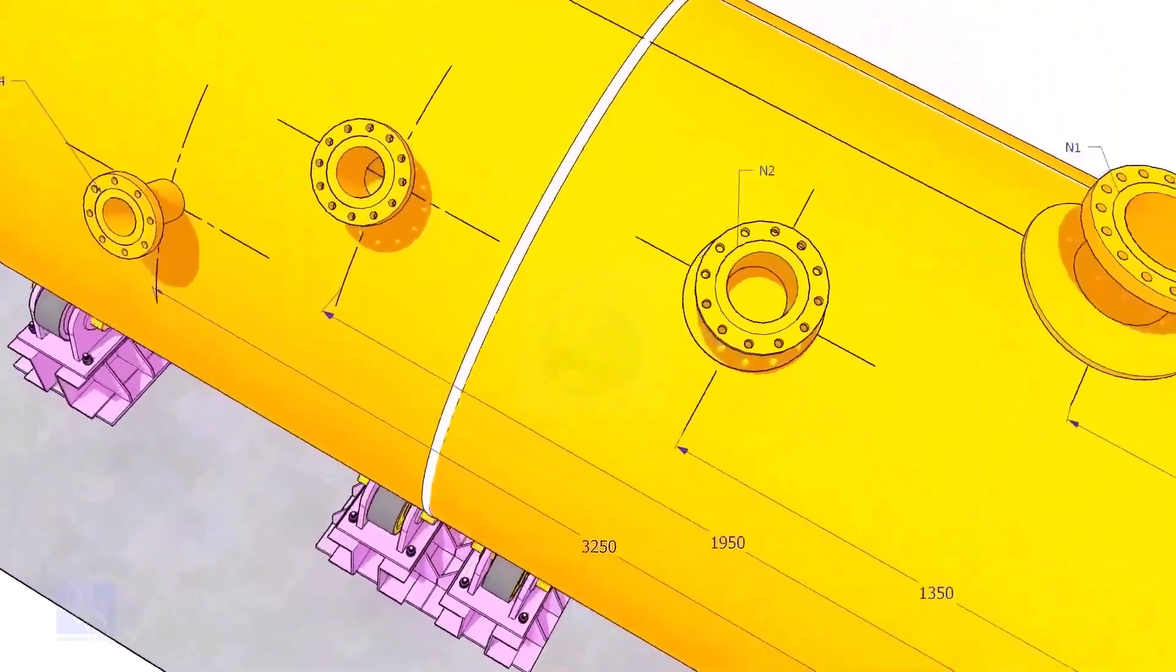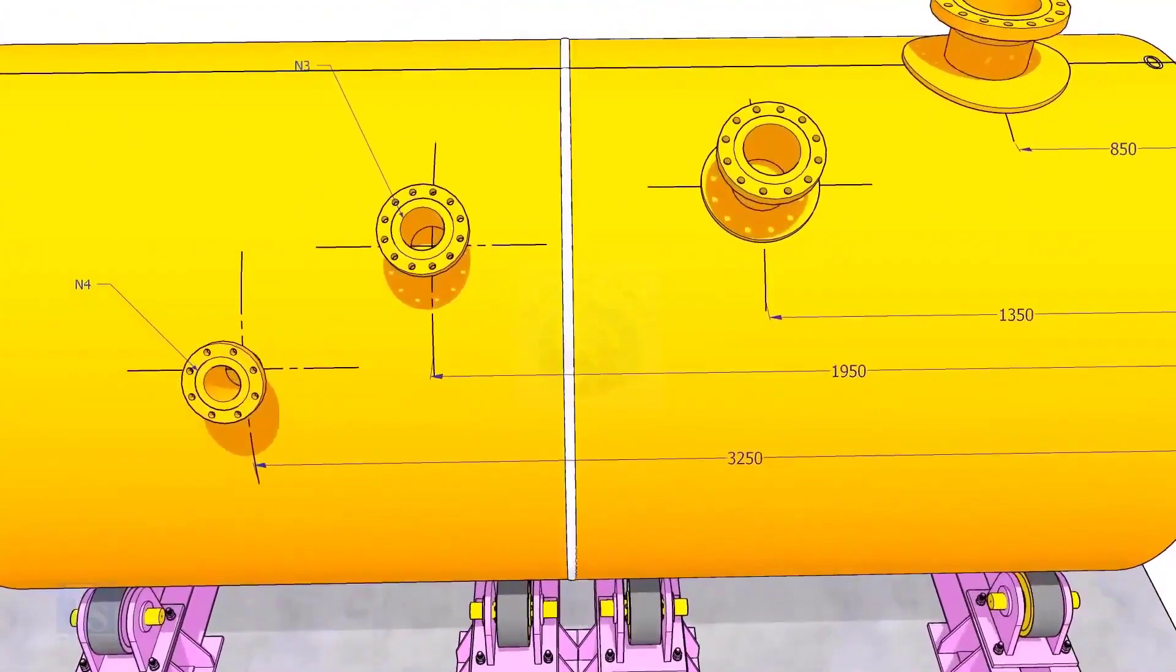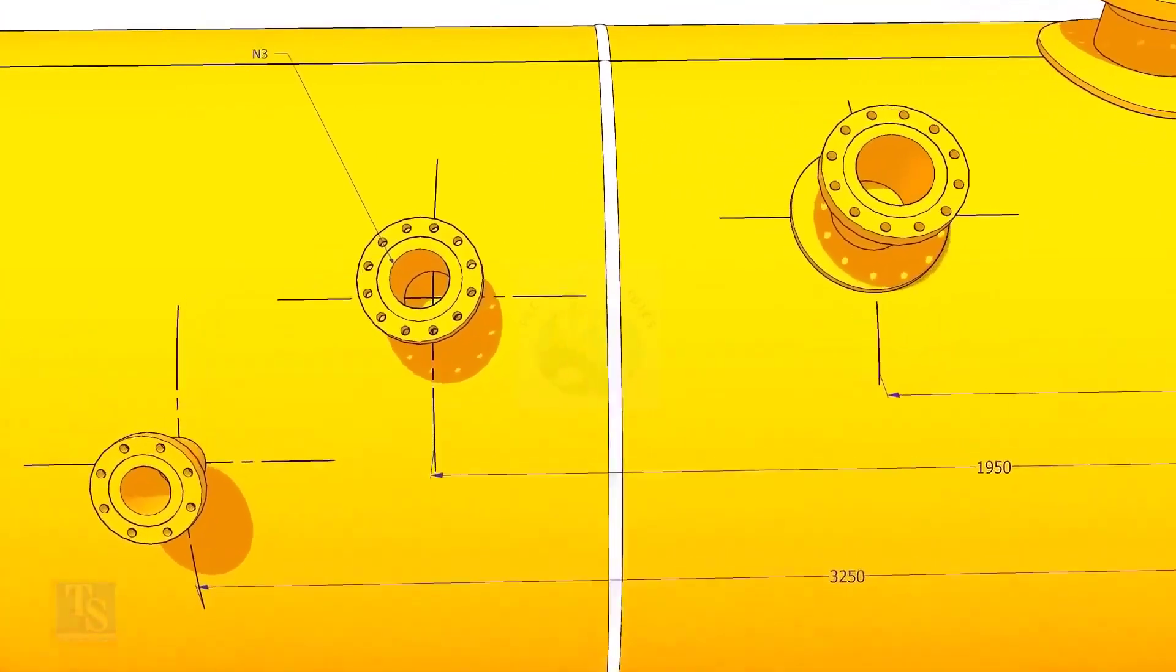Draw an arc of 1350 millimeters from the edge of the shell intersecting this line. This point is the center of nozzle N2.